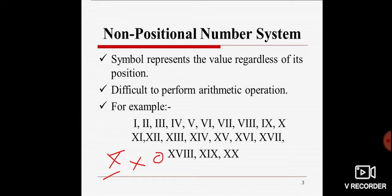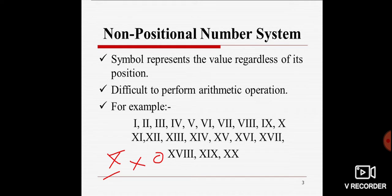For example, the Roman number system. This system has symbols such as Roman numbers like first, second, third, and fourth. There is no symbol for zero. Thus, this system is quite insufficient. In such a system, arithmetic calculations are not so easy. For example, suppose we want to multiply 10 by 0 — we don't get any answer.